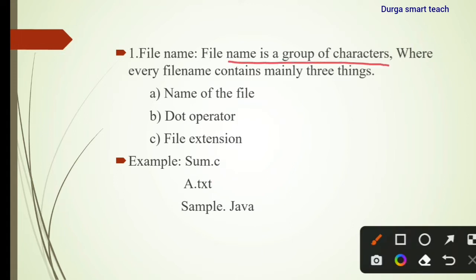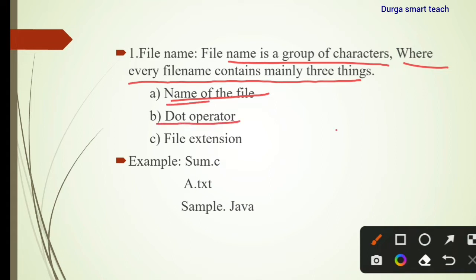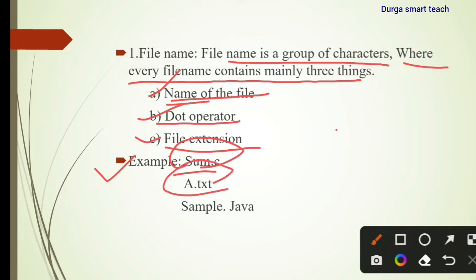First, the file name. A file name is a group of characters and every file name contains mainly three things: the name of the file, a dot operator, and a file extension — whether it is a text file, Java file, or C file. For example: sum.c, a.txt, and sample.java.